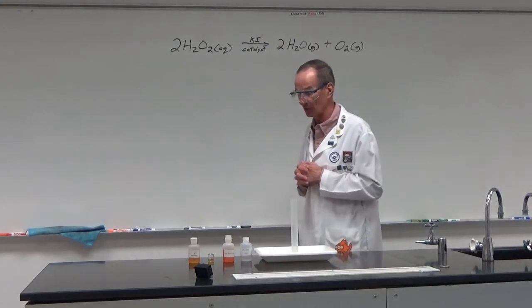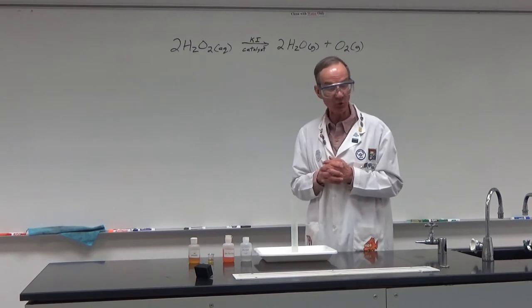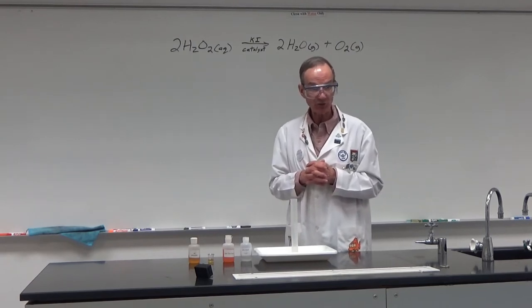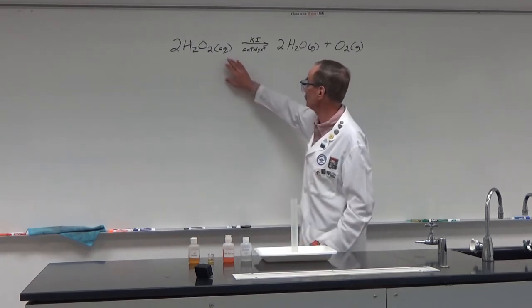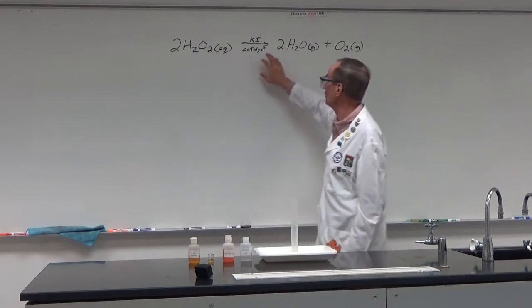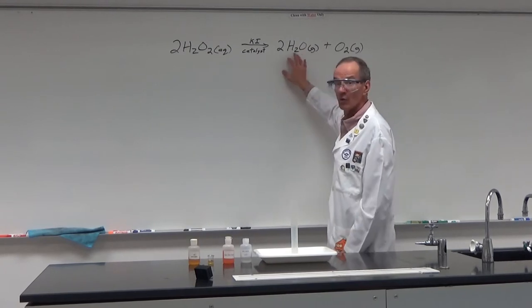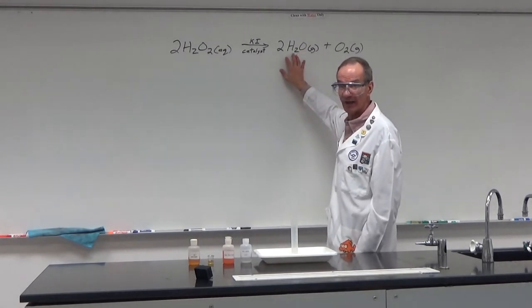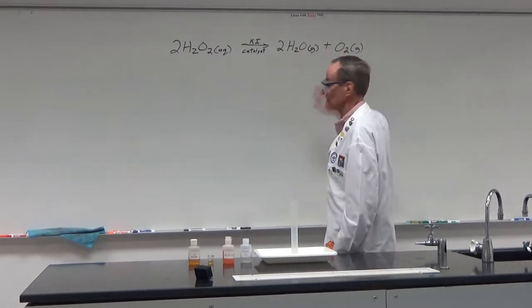Now if we look at the actual reaction that we're going to do, we're going to look at the decomposition, the rapid decomposition of hydrogen peroxide. We're going to have a solution that's mostly water of hydrogen peroxide, then we're going to use a catalyst to decompose it into water. We're going to actually get a mixture of water liquid and water vapor and oxygen gas.